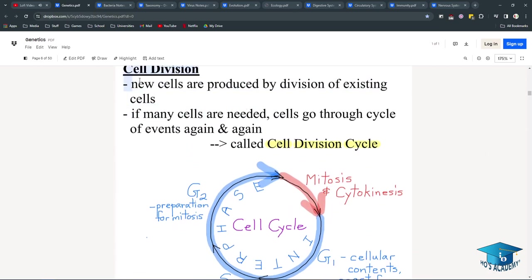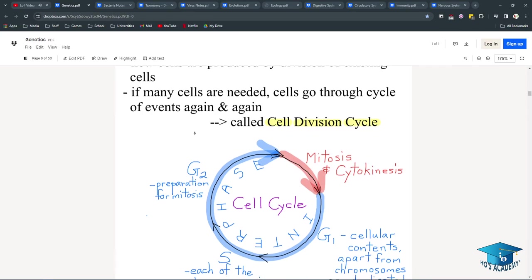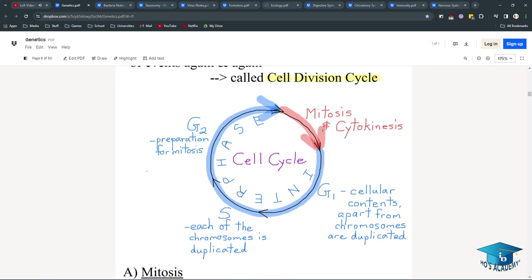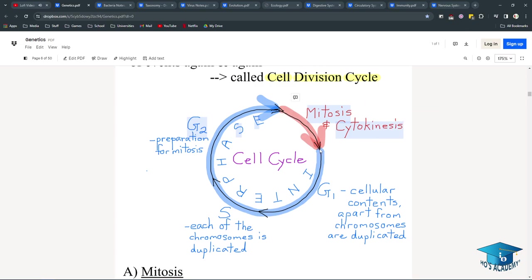Cell division. Oh, great. New cells are produced by the division of existing cells. If many cells are needed, cells go through the cycle of events again and again, called the cell division cycle. So there's G1, S, sandwiched between G1 and G2. Then this mitosis and cytokinesis part is actually a small segment of the cell division cycle. So just remember, in S, all your DNA is replicated. This is really important. I keep seeing it in paper two practices. G1, the cellular contents, aside from the chromosomes, are duplicated. So this is where I think your mitochondria number increases. I remember that was a big focal point for a bunch of questions. G2 is preparation for mitosis, so any last changes? Mitosis and cytokinesis is only this small segment.